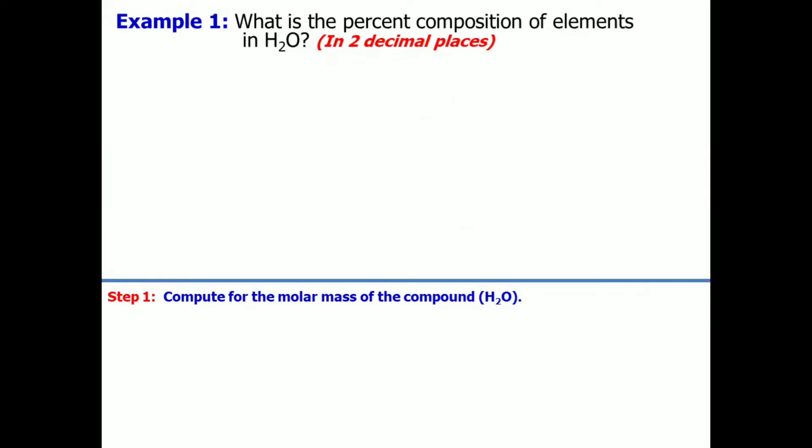From what we have learned from the previous video or lesson, we come up with this. In H2O, we have two hydrogen multiplied by the atomic mass, which can be found in the periodic table. Same goes with oxygen. Then, let's total their atomic masses. So, therefore, the molar mass of H2O is 18.02. It means one mole of H2O is equal to 18.02 grams.